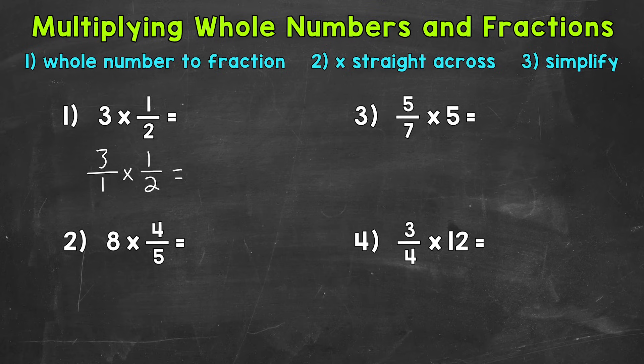So numerator times numerator, and then denominator times denominator. As far as the numerators, three times one is three. The denominators, one times two is two. So three-halves, or three over two, is our answer. But it's an improper fraction, so we don't want to leave it improper.